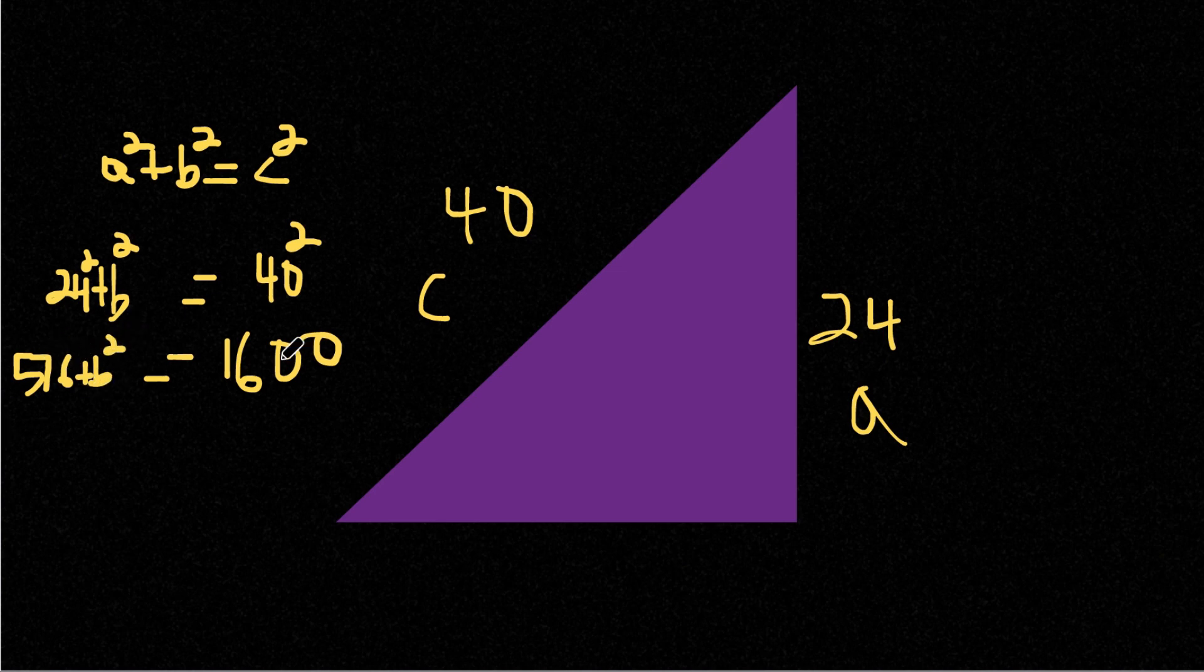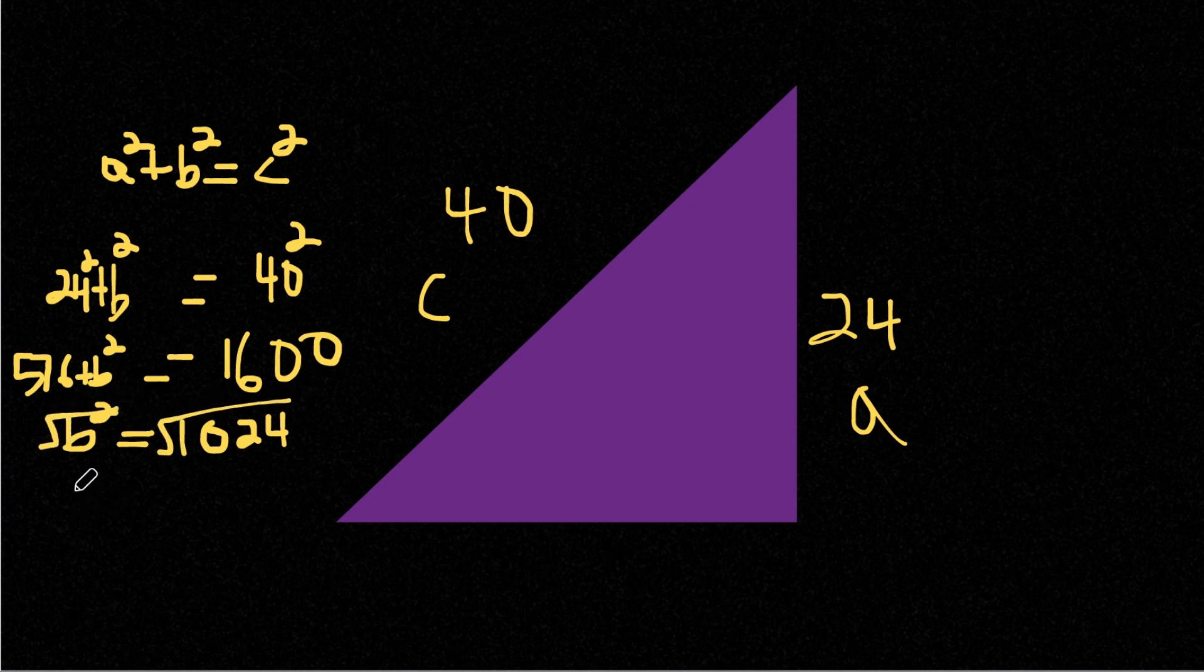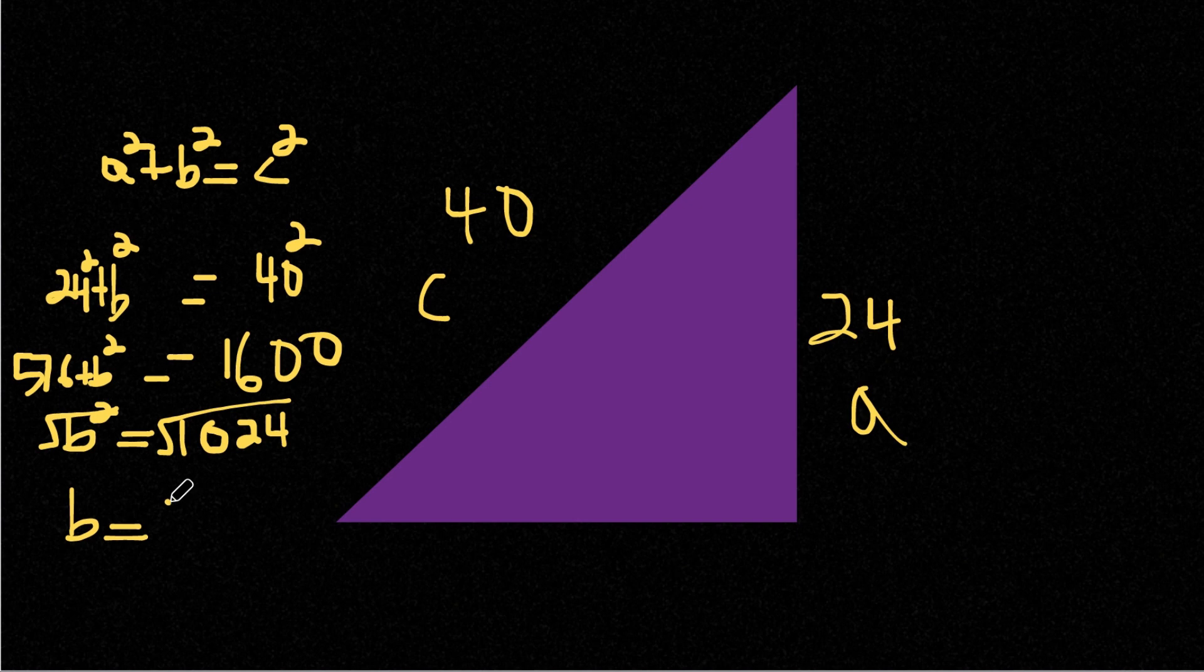Now we're going to subtract 576 on both sides. So we're left with b squared is equal to 1,024. Now we want to find the square root of both sides.